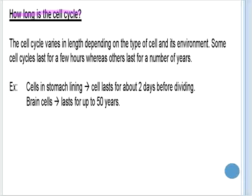In terms of the length of the cell cycle, this does indeed vary depending on the type of cell and its environment. Some cell cycles last for a few hours, others a number of years. By way of example, the cells in your stomach lining, the epithelial tissue in your mouth, they divide approximately every two days. Whereas brain cells, on the other hand, they have a much longer cell cycle. This can last up to 50 years.